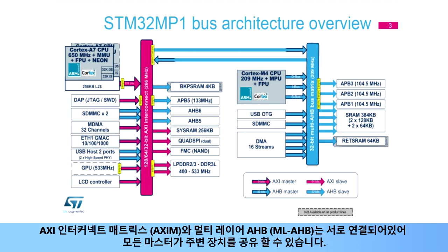The AXI Interconnected Matrix (AXIM) and Multi-layer AHB (MLAHB) are connected together to enable the sharing of any peripheral by any master.